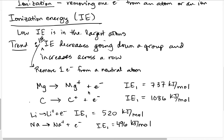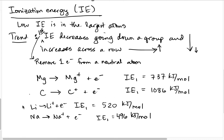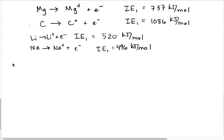This is our second periodic trend: ionization energies increase across a row and decrease down a group. Both ionization energy and its companion energy type, electron affinity, are not quite as strongly correlated in trend as atomic size is. Let's talk a little more about ionization energies and connect with what we observe in terms of the ions that form.